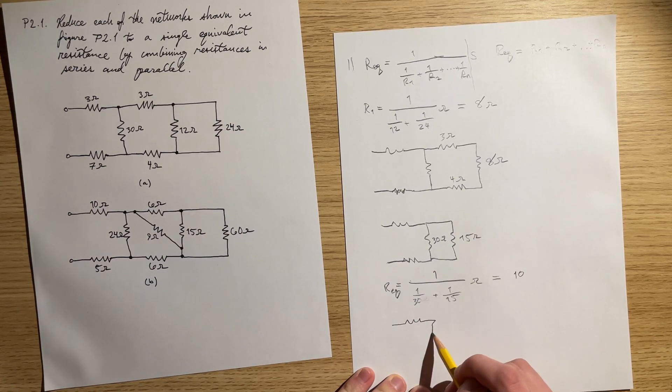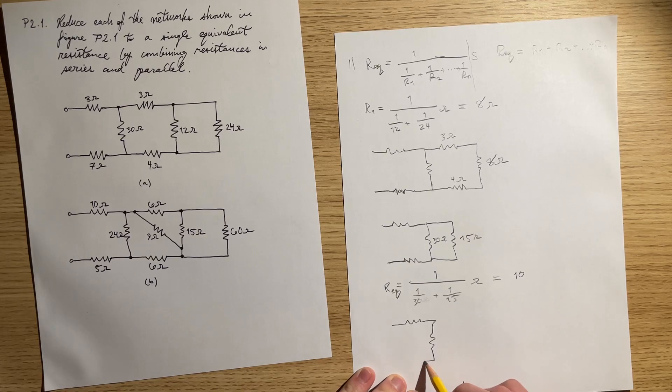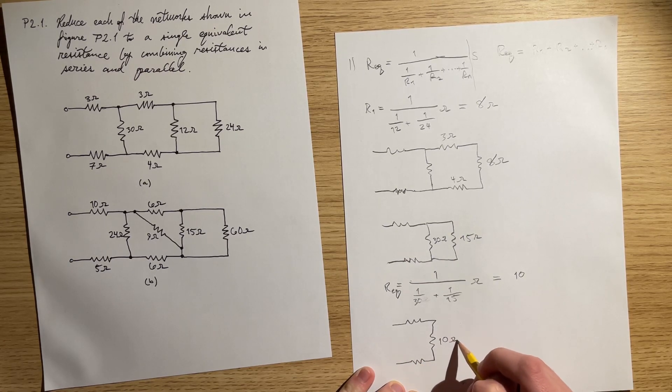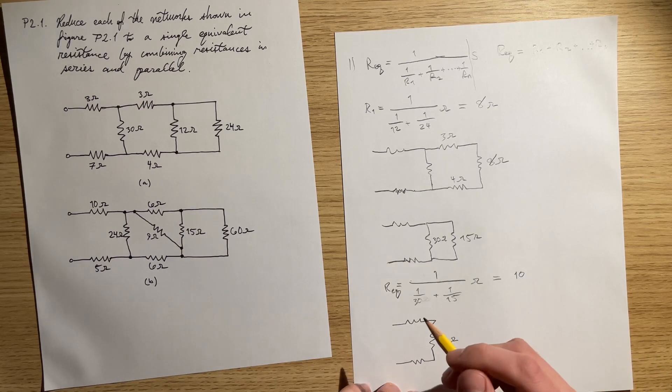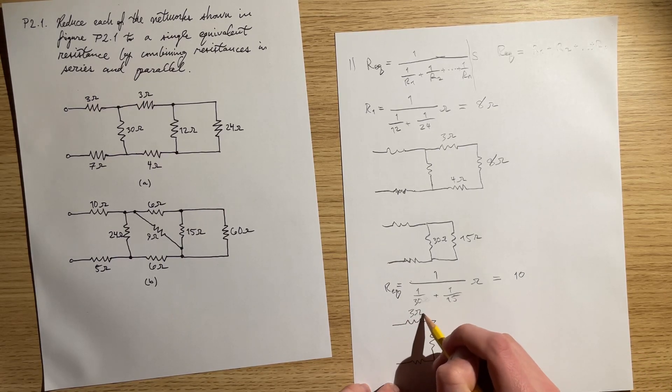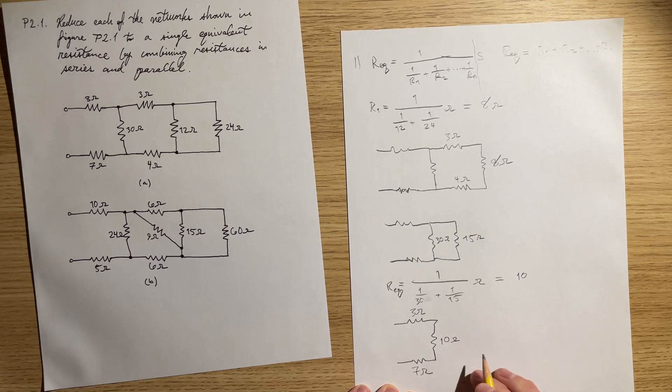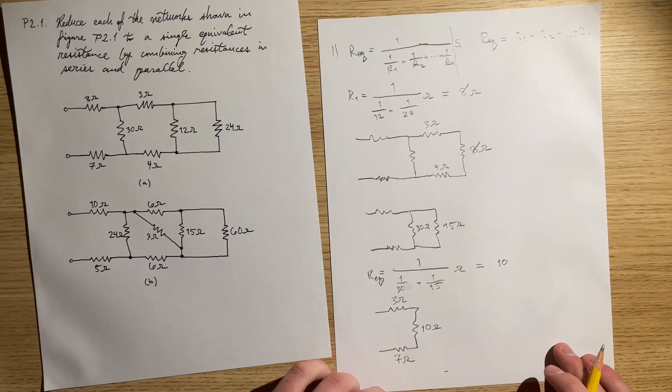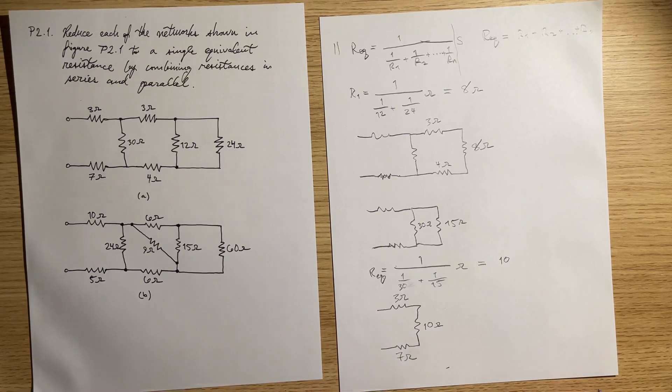Now the circuit has simplified to this right here: 10 ohms, 3 ohms, and 7 ohms. Let's just try and move that up a little bit. That looks good.